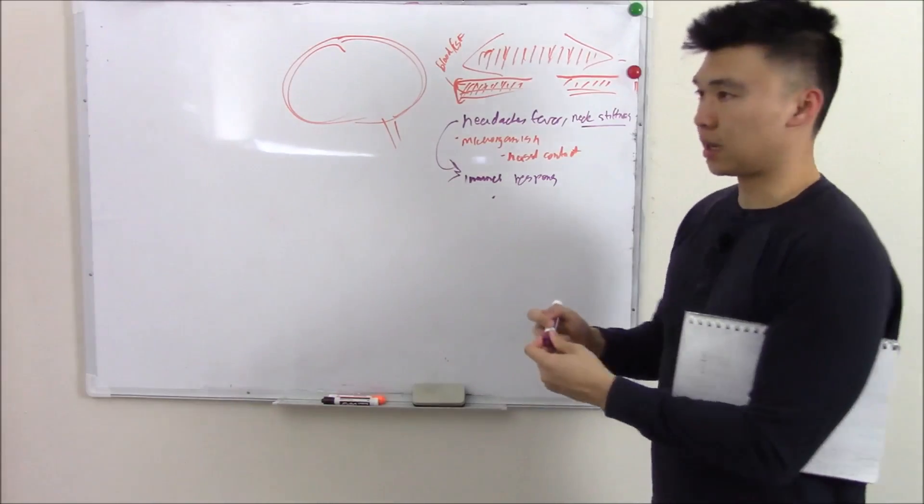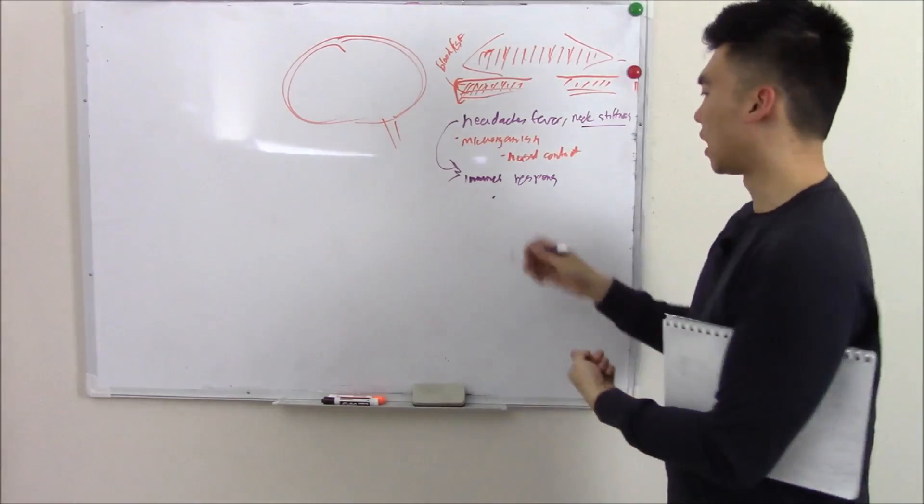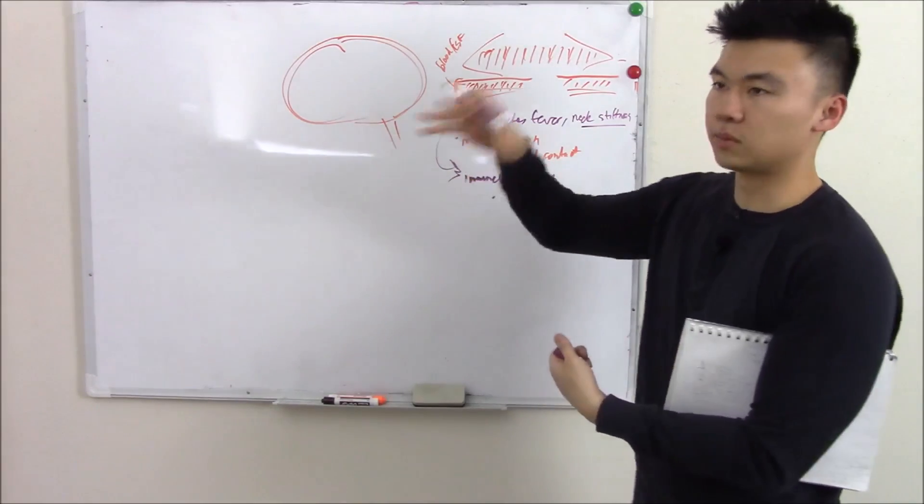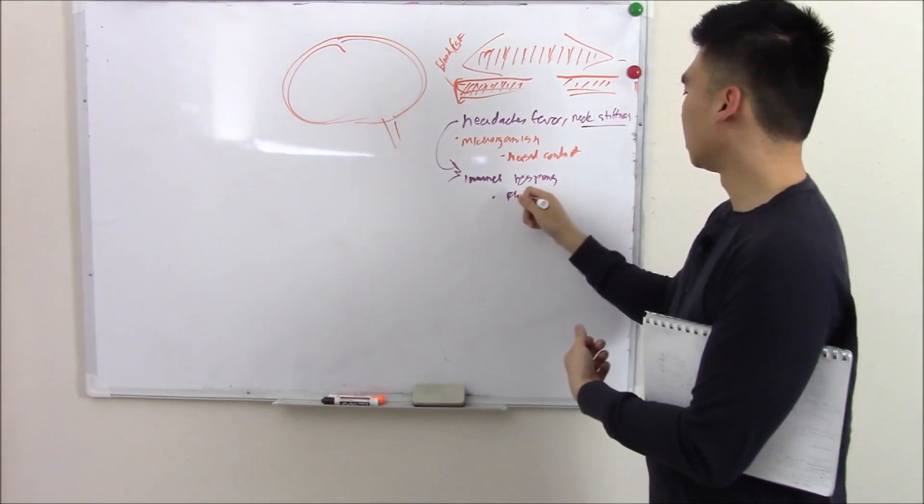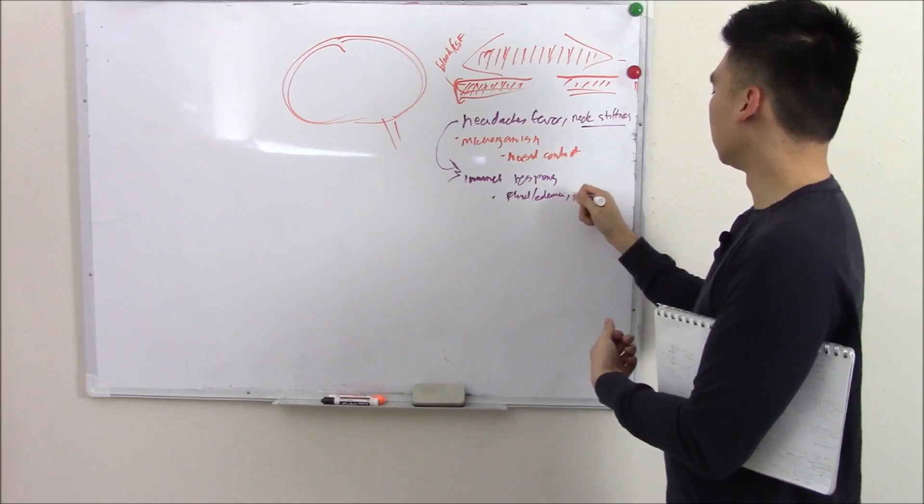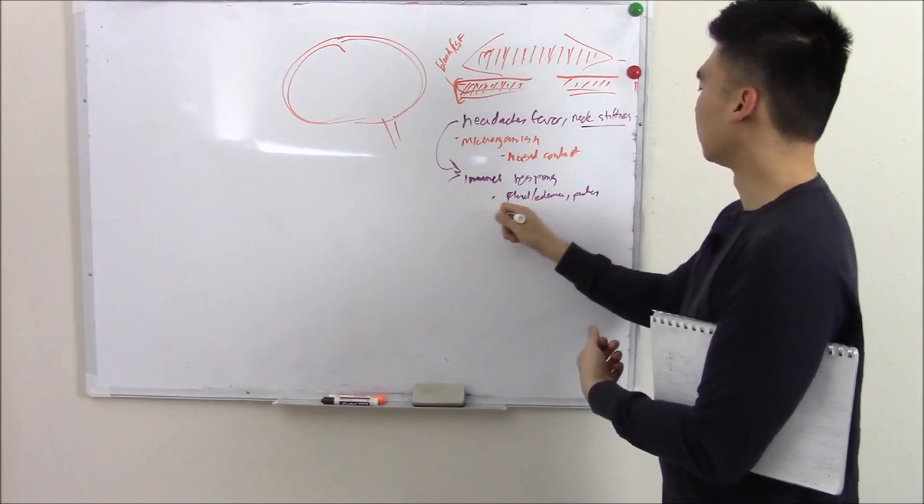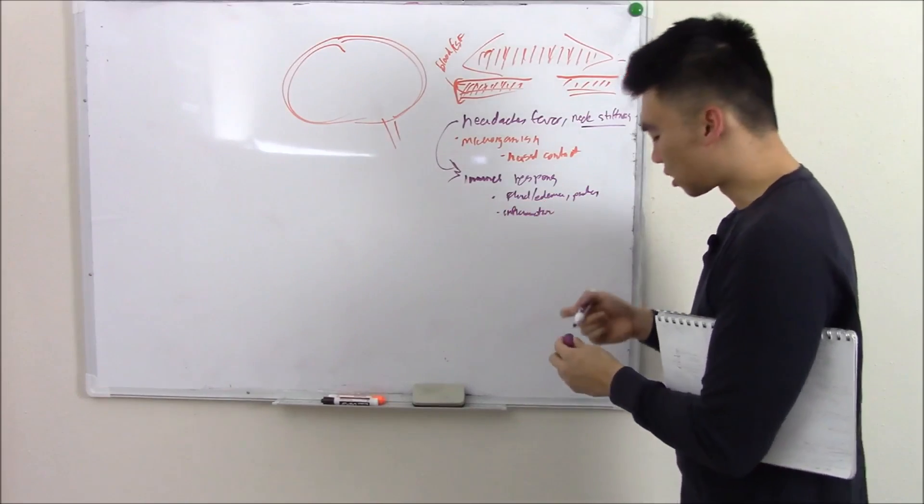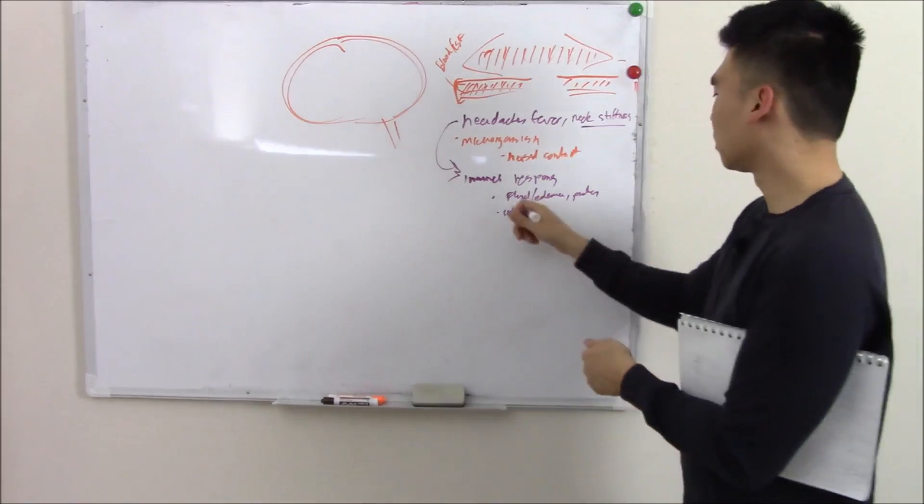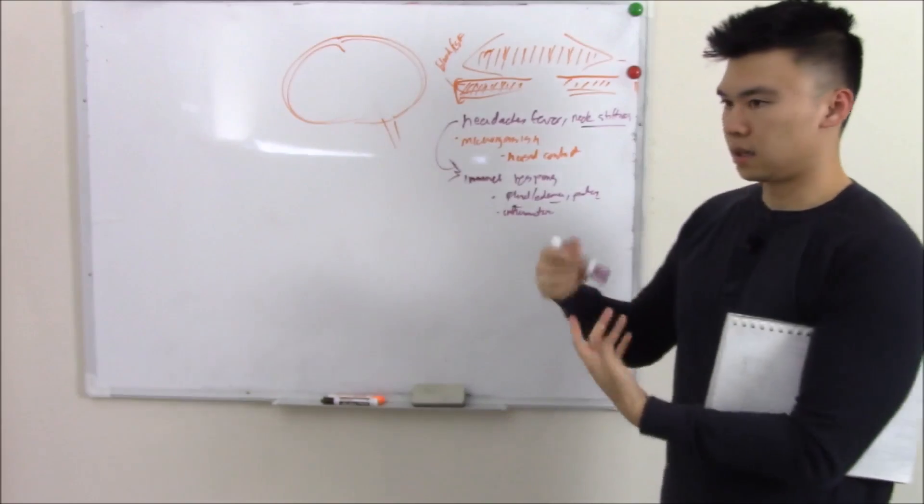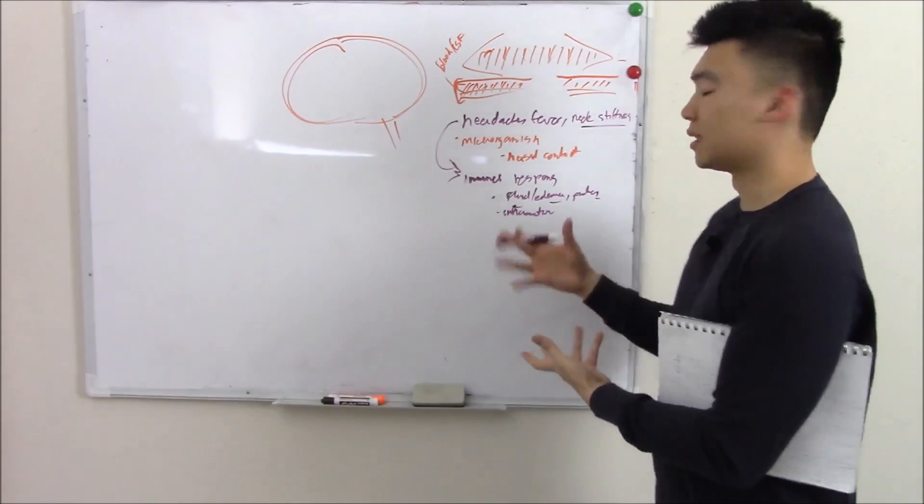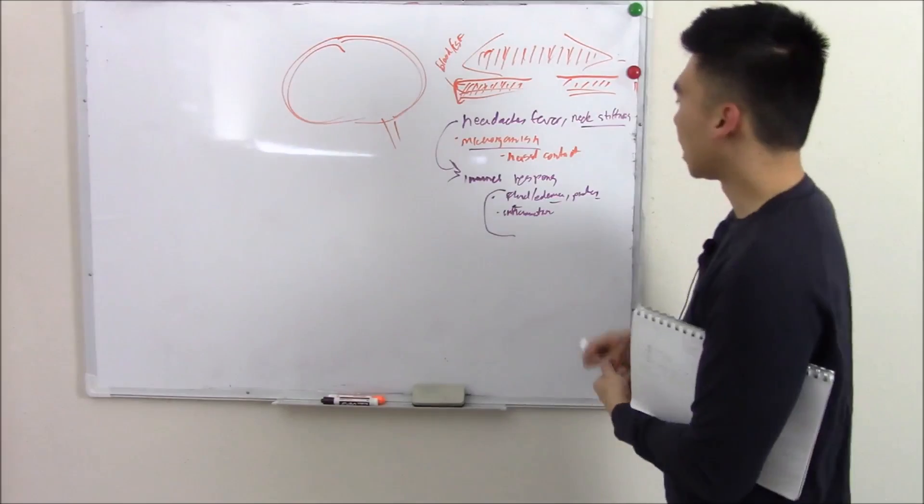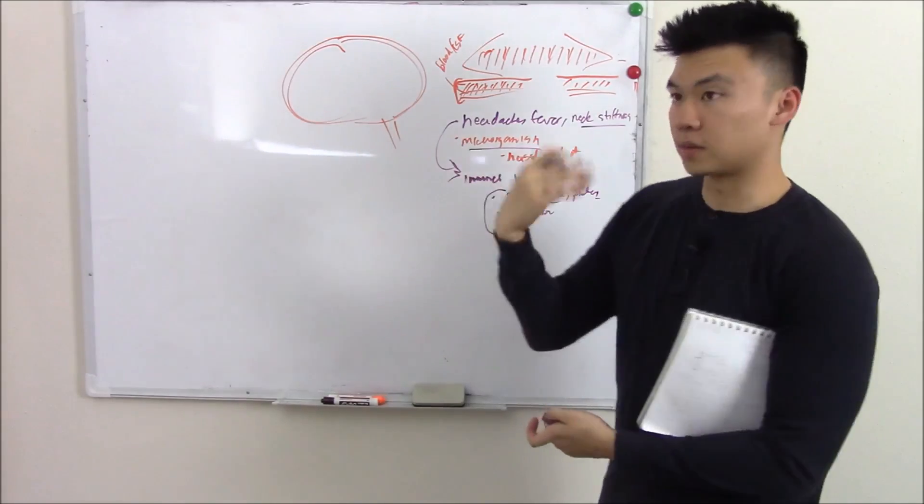This causes increased permeability. More protein, more fluids will go in. So fluid, edema, protein, inflammation. This causes all these signs. Now the fluid and edema usually isn't enough to raise your ICP, but in extreme cases it could be. And this is all due to the microorganisms invading your meninges.